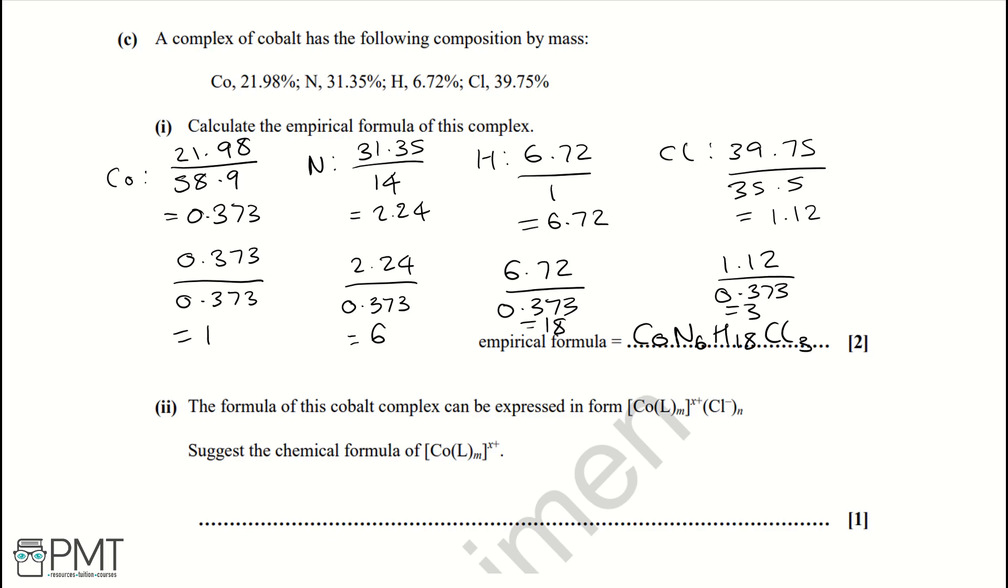Part two: The formula of this cobalt complex can be expressed in the form [Co(L)ₘ]ˣ⁺ Cl⁻ₙ. Suggest the chemical formula of [Co(L)ₘ]ˣ⁺. So in the empirical formula we have three chlorines, so in the form we're going to have chlorine and n will equal 3. That means the value of x has to be 3+ in order for it to be a balanced complex. So then we're left with our nitrogens and hydrogens, so the L in this complex will be NH₃, so ammonia will be our ligand.